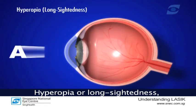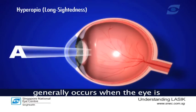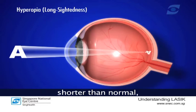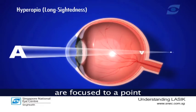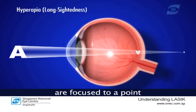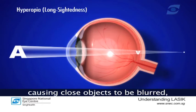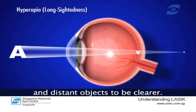Hyperopia, or long-sightedness, generally occurs when the eye is shorter than normal, so that distant light rays are focused to a point behind the retina, causing close objects to be blurred and distant objects to be clearer.